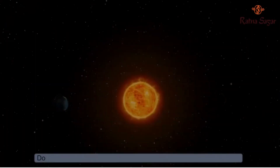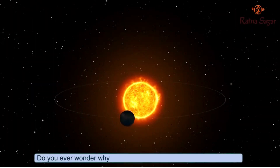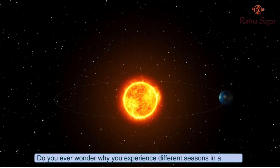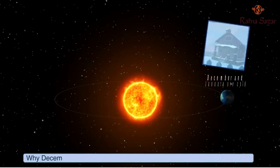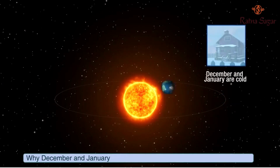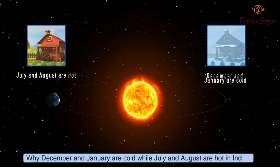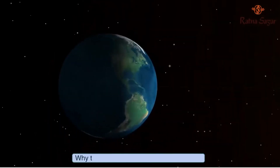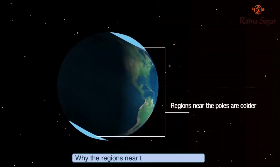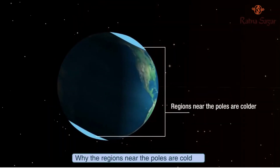Do you ever wonder why you experience different seasons in a year? Why December and January are cold while July and August are hot in India? Why the regions near the poles are colder?